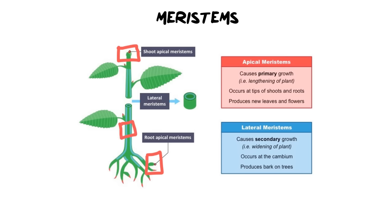Apical meristems — the meristems we find at the tip — cause primary growth and the lengthening of the plant. What that means is the apical meristems are responsible for plants growing up towards the sun, but also the roots growing down towards water and soil.